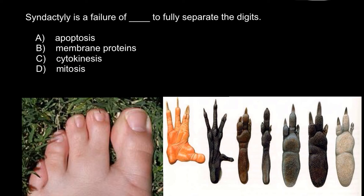Now let's look at the answer choices. Answer D, mitosis, is the division of somatic cells — not the correct answer. Answer C, cytokinesis, is the division of cytoplasm and organelles between two daughter cells — also wrong. Answer B, apoptosis, is the correct answer. Syndactyly is caused by failure of signaling proteins to signal apoptosis — that is, programmed cell death — which normally separates the digits.